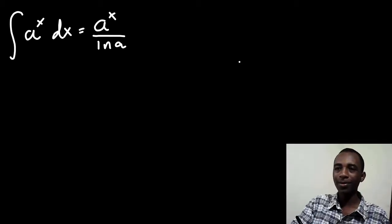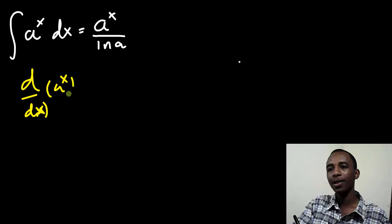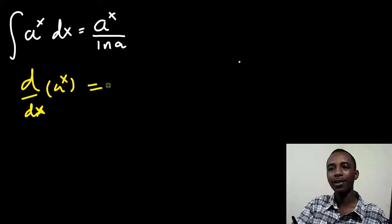So, let's start with the derivative of a to the power x. You may already know what this derivative is. The derivative of a to the power x is a to the power x times the natural log of a. Let me show you how that comes.